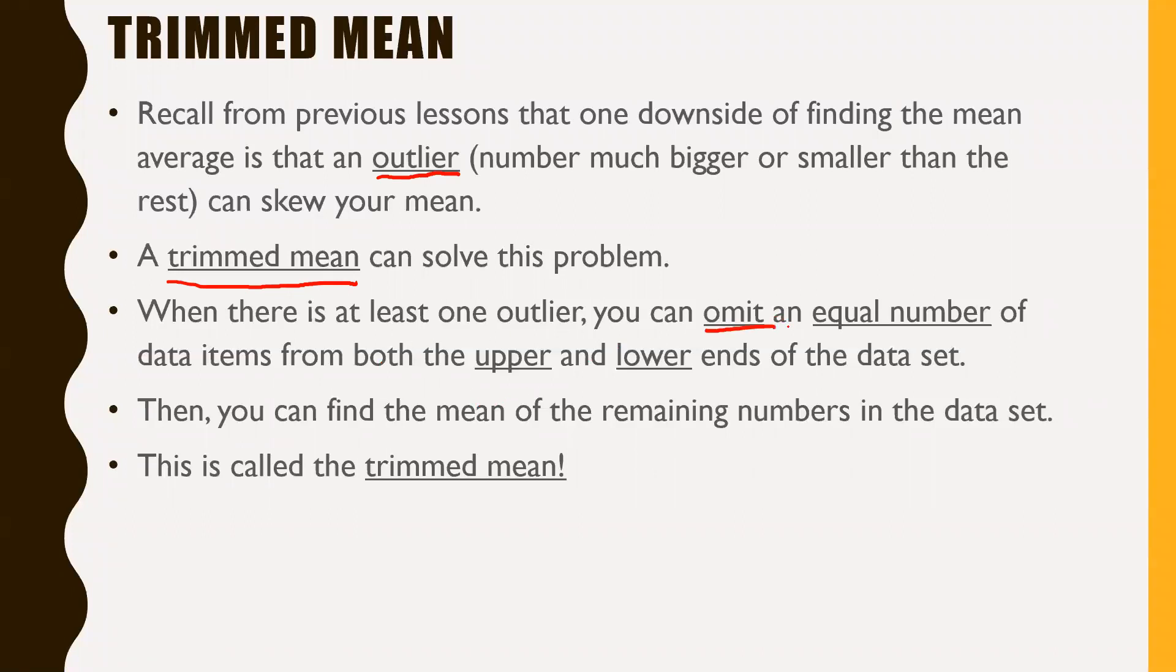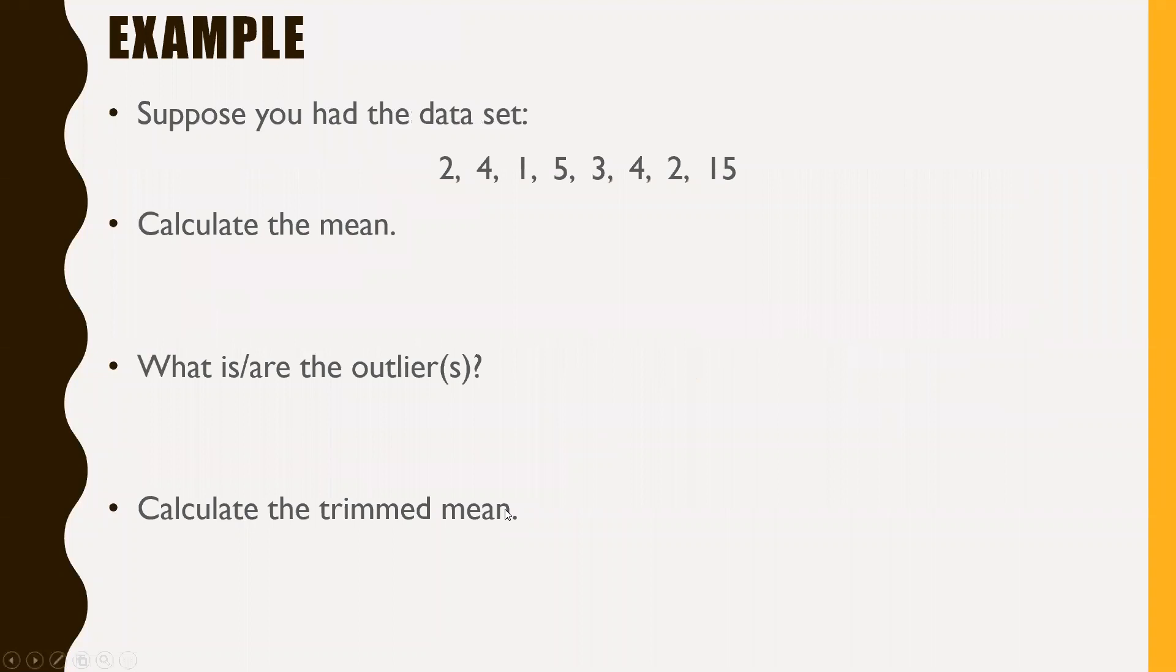When there's at least one outlier, you can omit an equal number of data items from both the upper and lower ends of the data set. If you took someone off the high end of the list, you have to take someone off the bottom end. Then you can find the mean of the remaining numbers in the data set. This is called the trimmed mean.